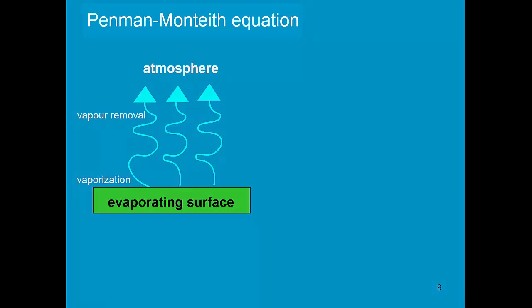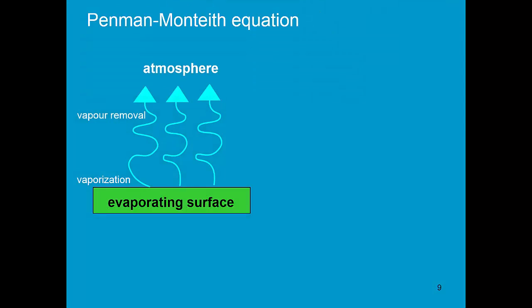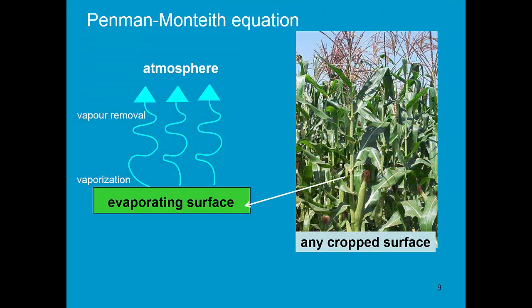Monteith improved the Penman equation, and as a crop physiologist, he was able to bring in resistance. The Penman-Monteith equation does not describe the reference evapotranspiration, but the crop evapotranspiration under non-standard conditions. Therefore, he introduced resistance factors.